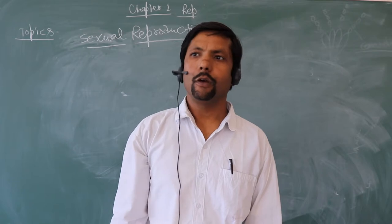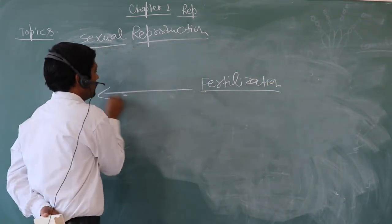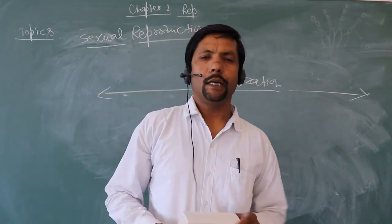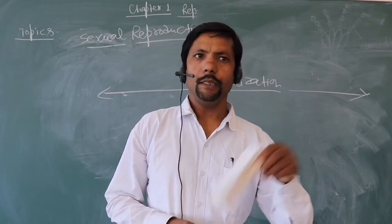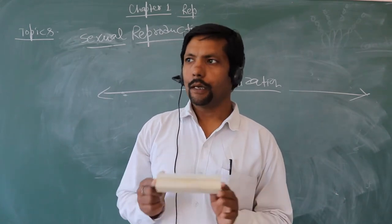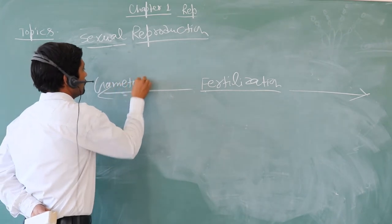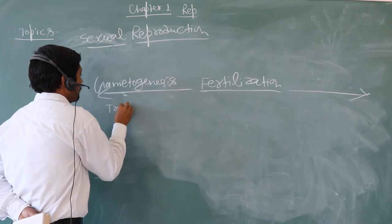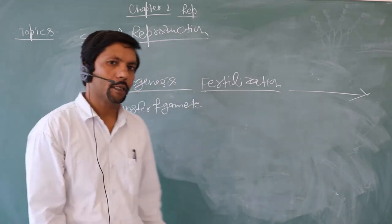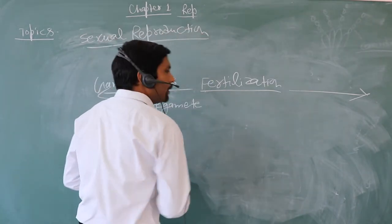Gamete formation is also called gametogenesis. So in terms of the type of fertilization, we also call the pre-fertilization event accordingly. After the pre-fertilization event, we have two parts: one is gamete formation or gametogenesis, and the other is the transfer of gamete — how the gamete is transferred from the male body to the female body. Let us start with gametogenesis.